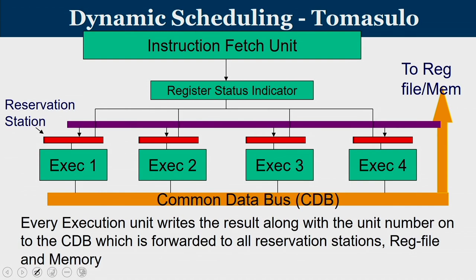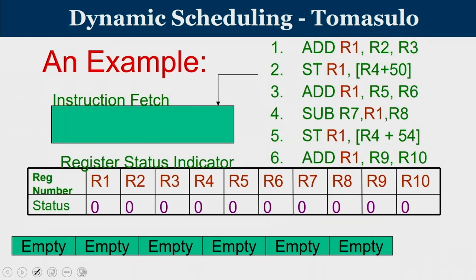Every execution unit writes its result along with its unit number onto the CDB, which is forwarded to all reservation stations, the register file, and memory. When a value X appears on the CDB, waiting reservation stations need to know which functional unit produced it — that is why the functional unit name must be tagged with the result. If the functional unit name is not mentioned, reservation station entries cannot distinguish which unit produced which value.